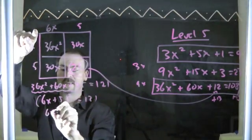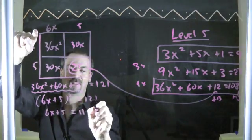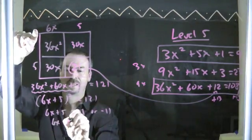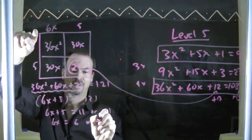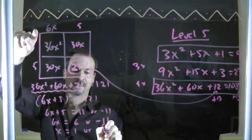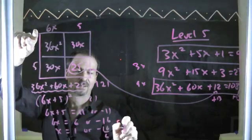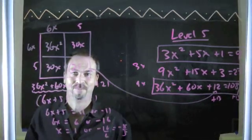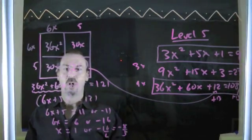Something squared is 121. 6x plus 5 is 11 or negative 11. 6x is 6 or negative 16. X better be 1 or negative 16 sixths, which I guess is negative 8 thirds. Beautiful! There it is. That's the ultimate box method.